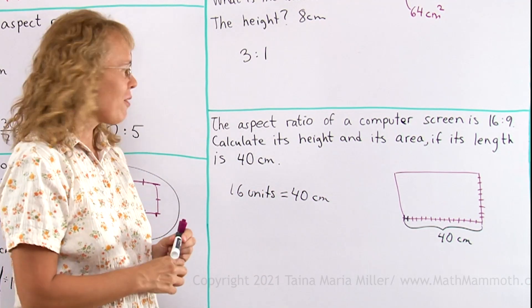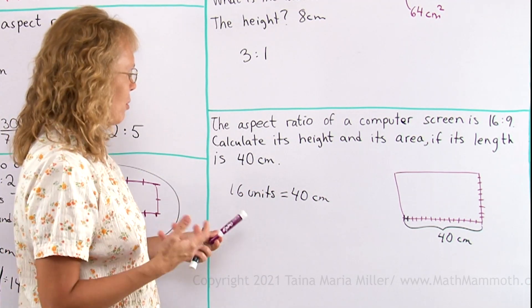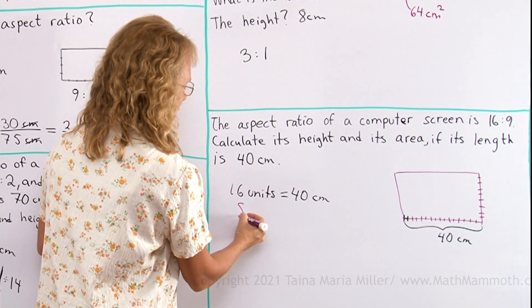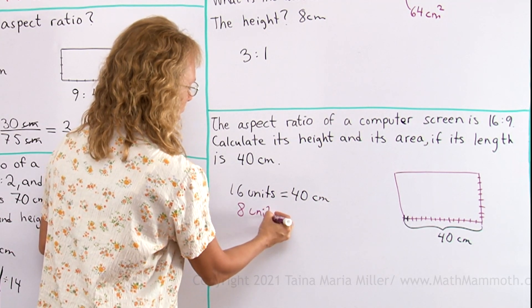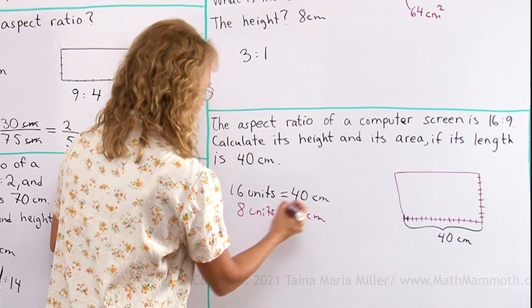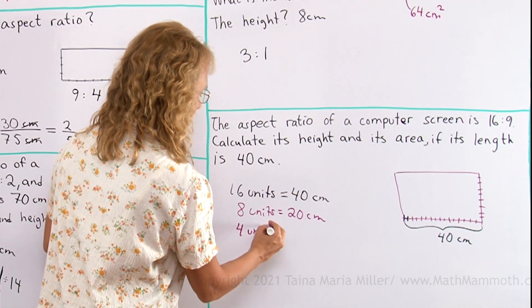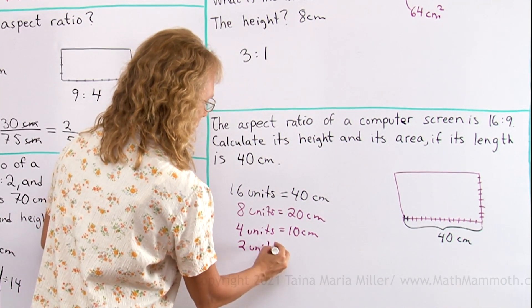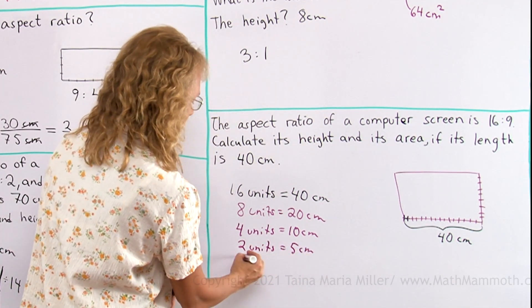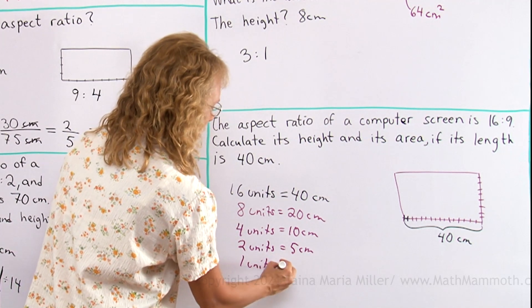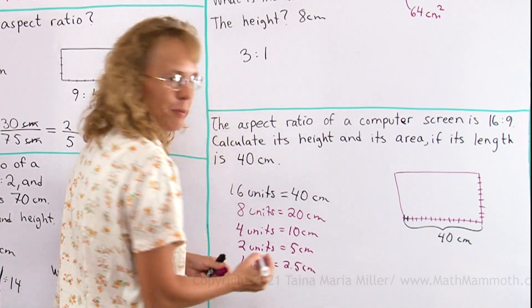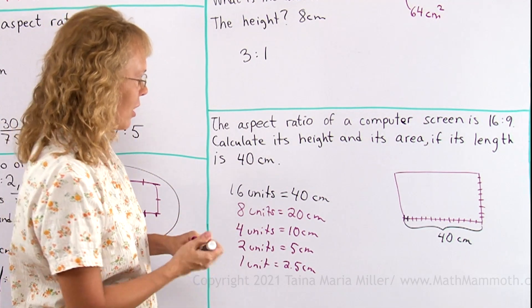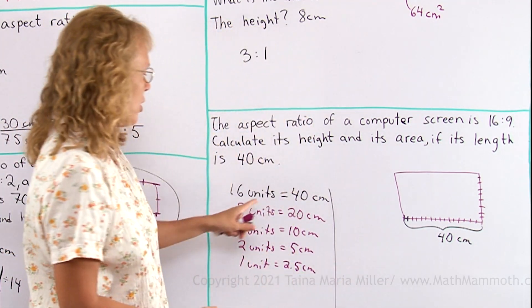I'll show you two ways to solve this. The first way is if you don't really know much about equations, you can think of it. Okay, I'll halve this. I'll take half of both sides. 8 units is 20 centimeters. And then 4 units. Half of it again is 10. And then 2 units is 5 centimeters. And then take half of that and you get 1 unit. It's 2 and a half centimeters. Right? Isn't this pretty easy? And the other way is to use an equation.